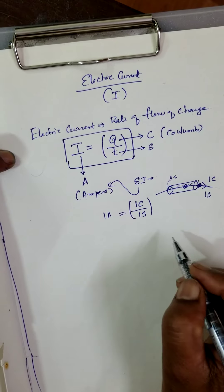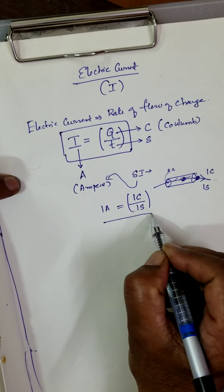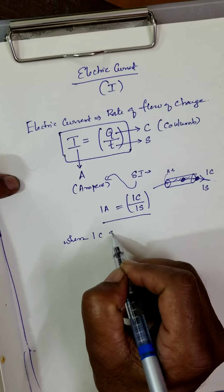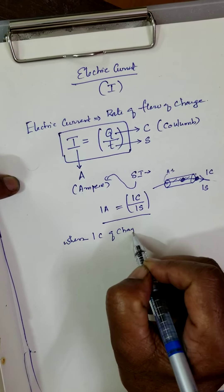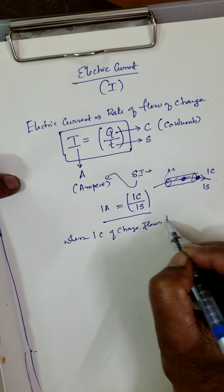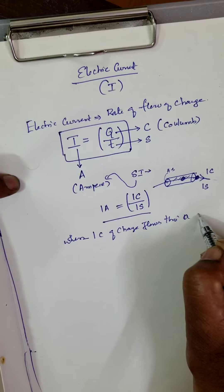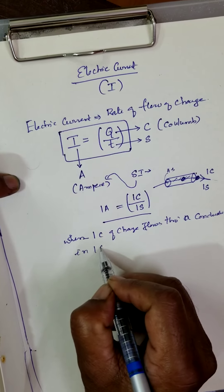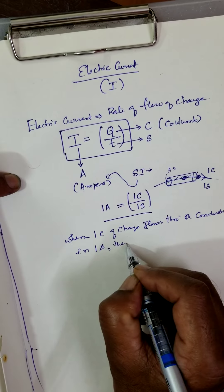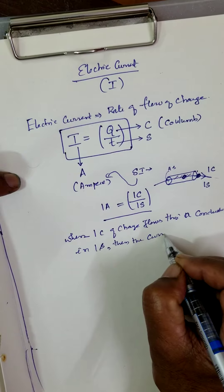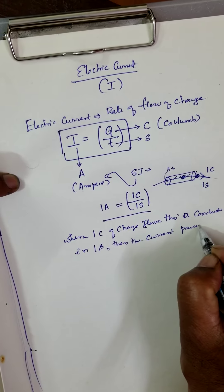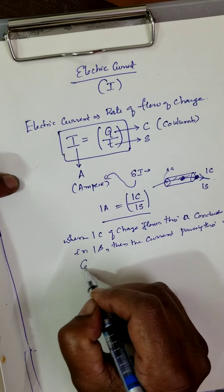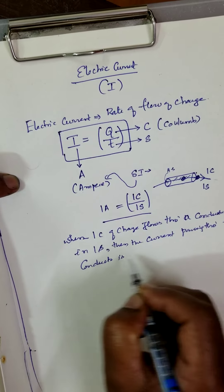Then how much current is flowing in the conductor? One Ampere of current. Therefore, how to define one Ampere? You can define when one coulomb of charge flows through any conductor, through a conductor in one second, then the current passing through that conductor is one Ampere.